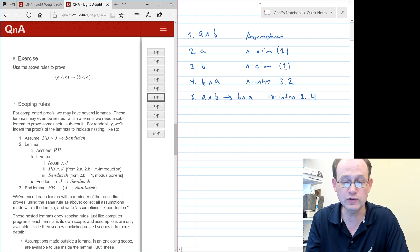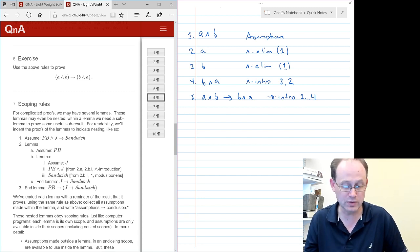So that's the proof. In five lines we were able to prove that A and B implies B and A. And hopefully that's a good example of how to do a proof in propositional logic.